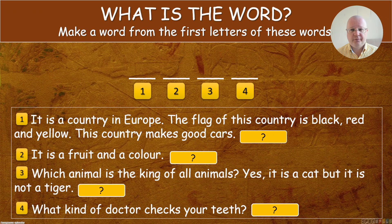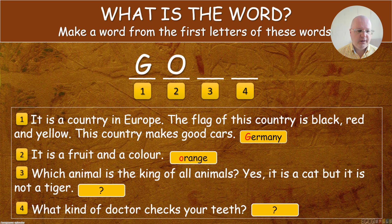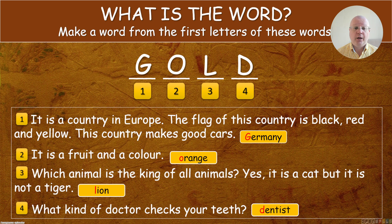Here's another quiz-type activity you can use in class: 'What is the word? Make a word from the first letters of these four words.' For example: number one is a country in Europe whose flag is black, red, and yellow — it's Germany. Number two is a fruit and a color. Number three is the animal that is king of all animals. Number four is what kind of doctor checks your teeth. You can do this activity in pairs, in groups, or invite students from each team to do it on the board. It's really adaptable.